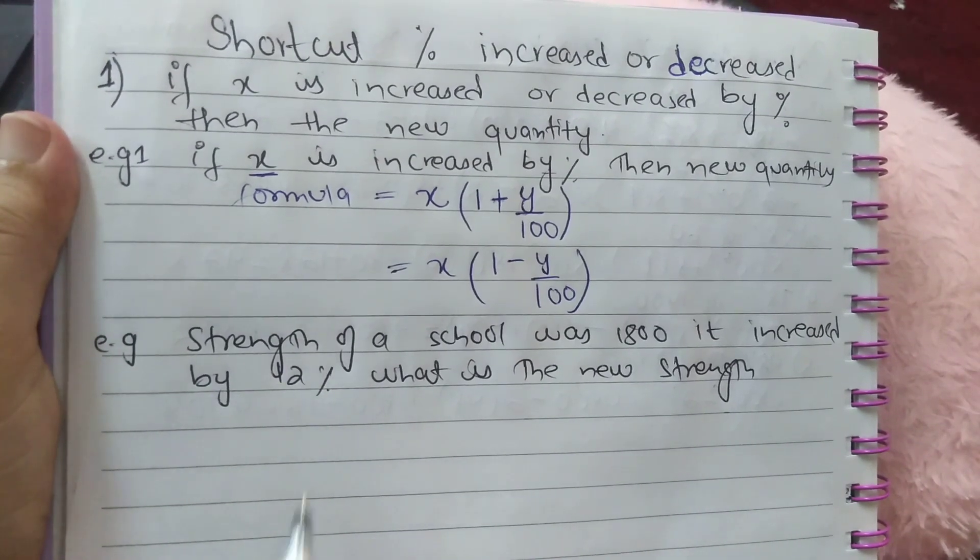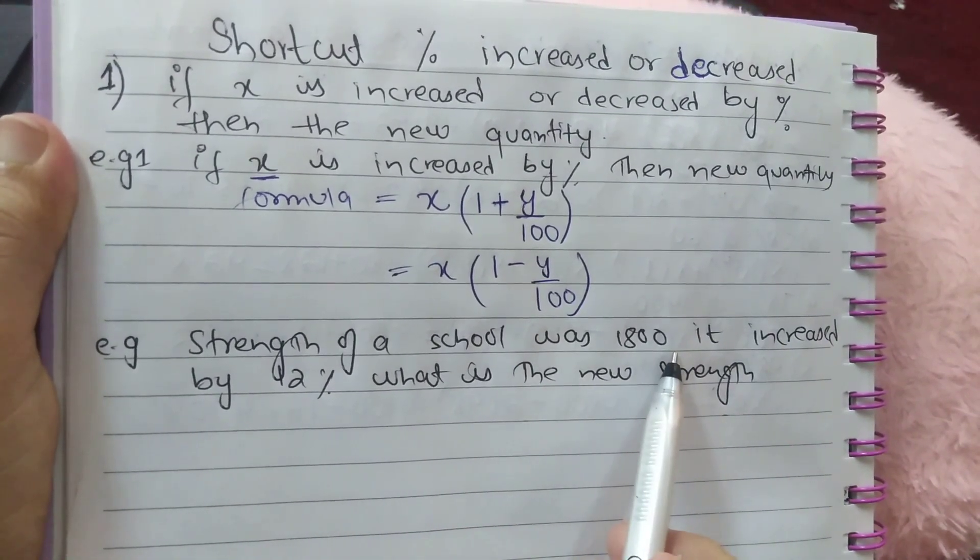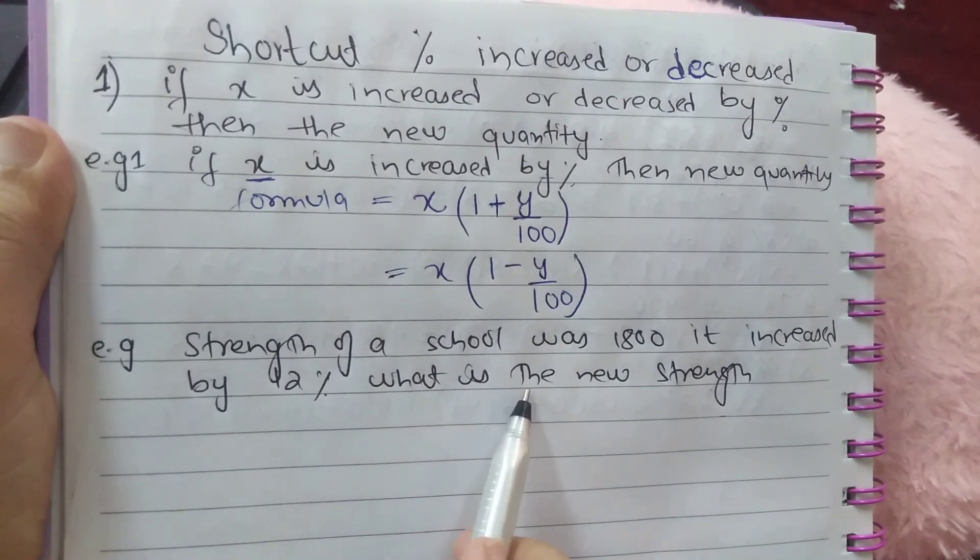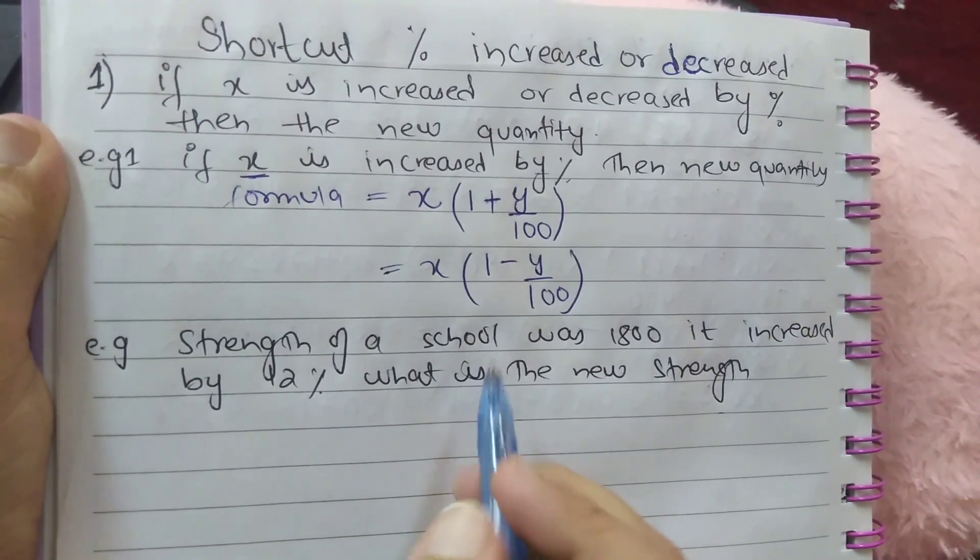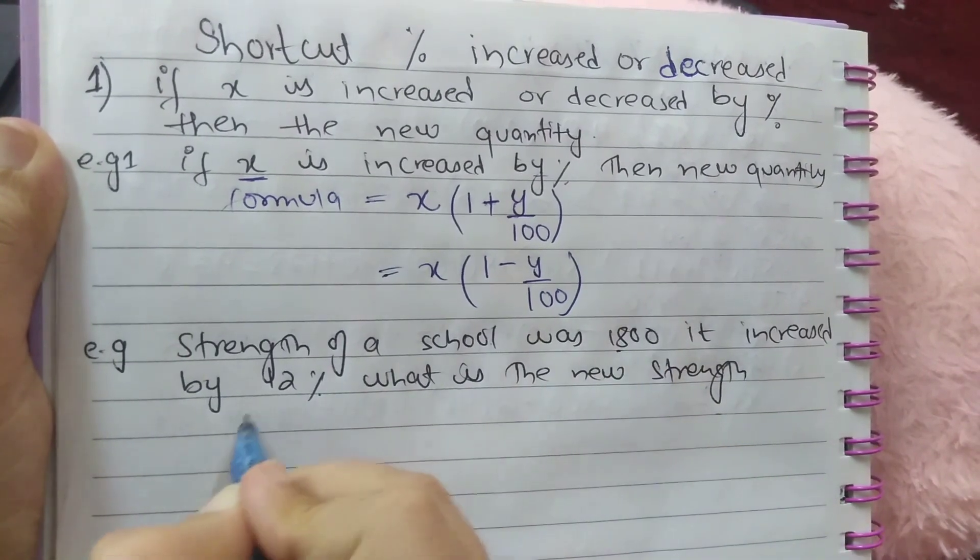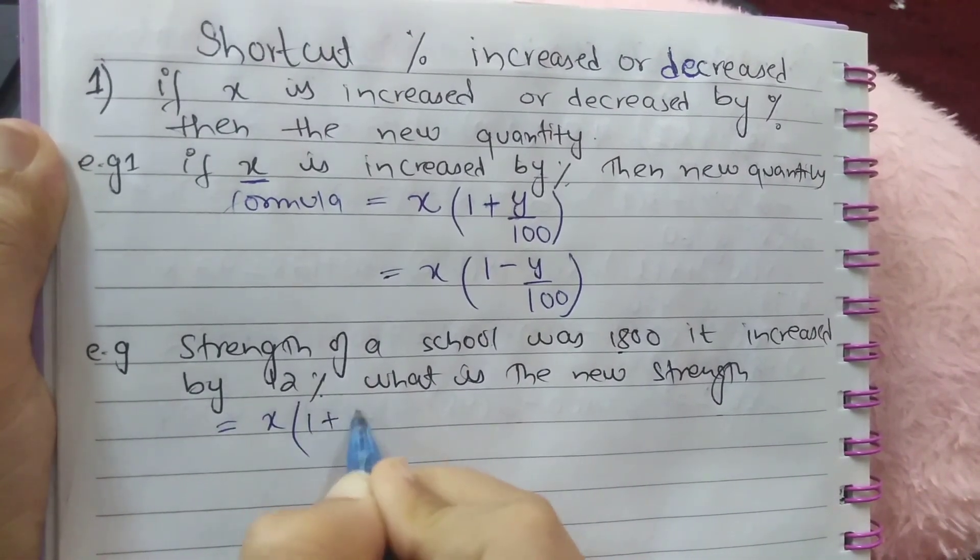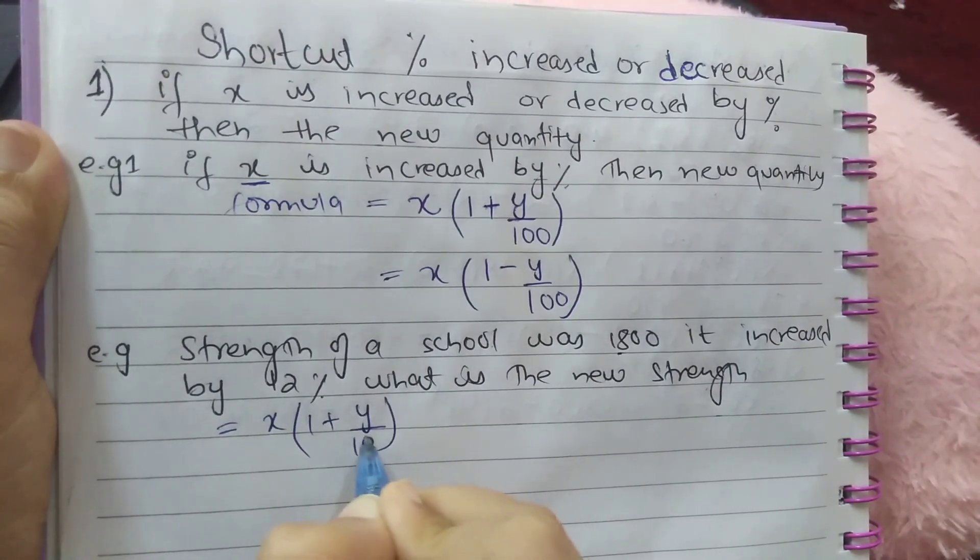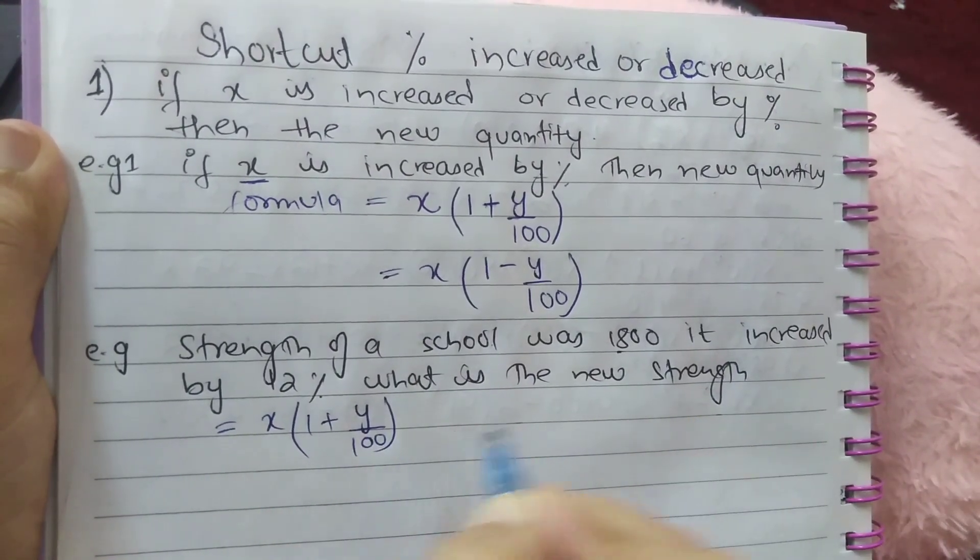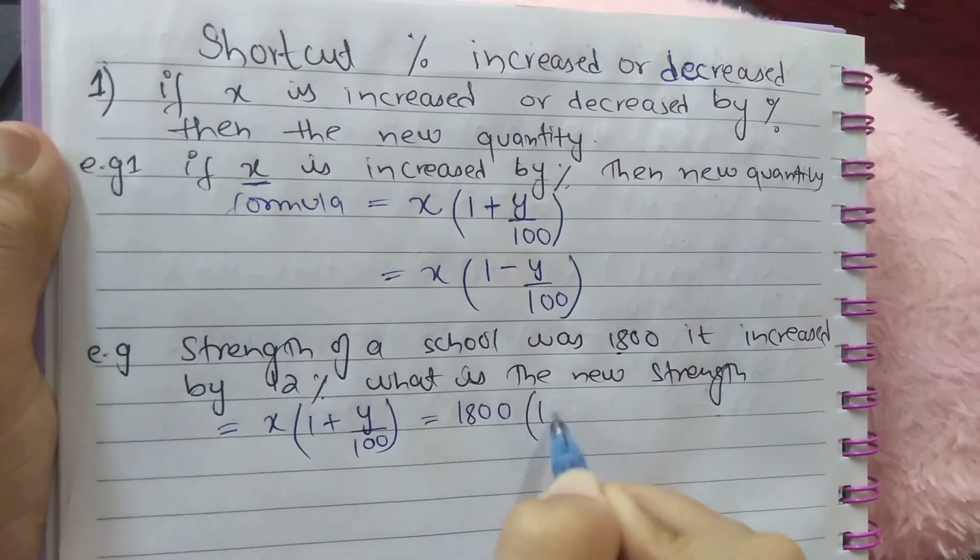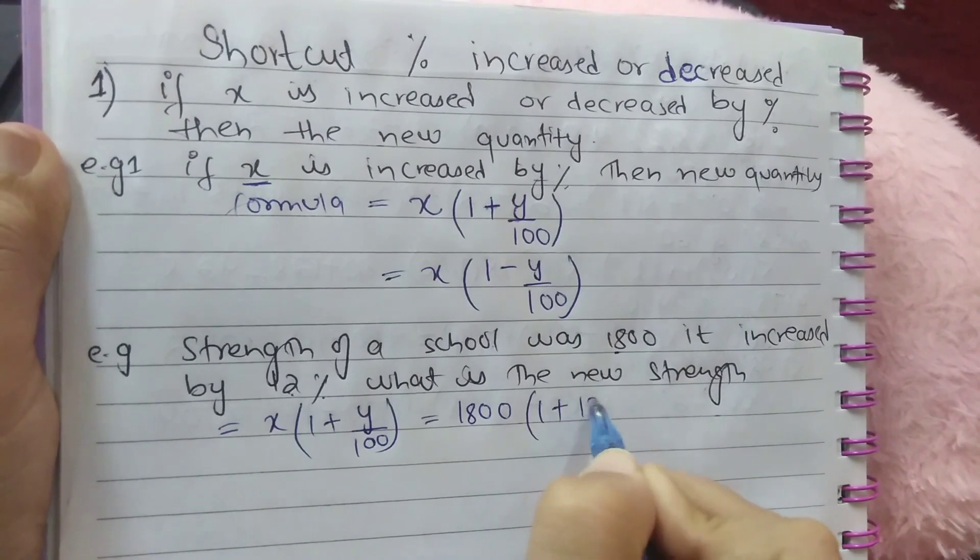Let's do an example. Strength of a school was 1800. It is increased by 12 percent. What is the new strength? So X here is 1800, strength of school is 1800. As here is increased, I used plus sign.